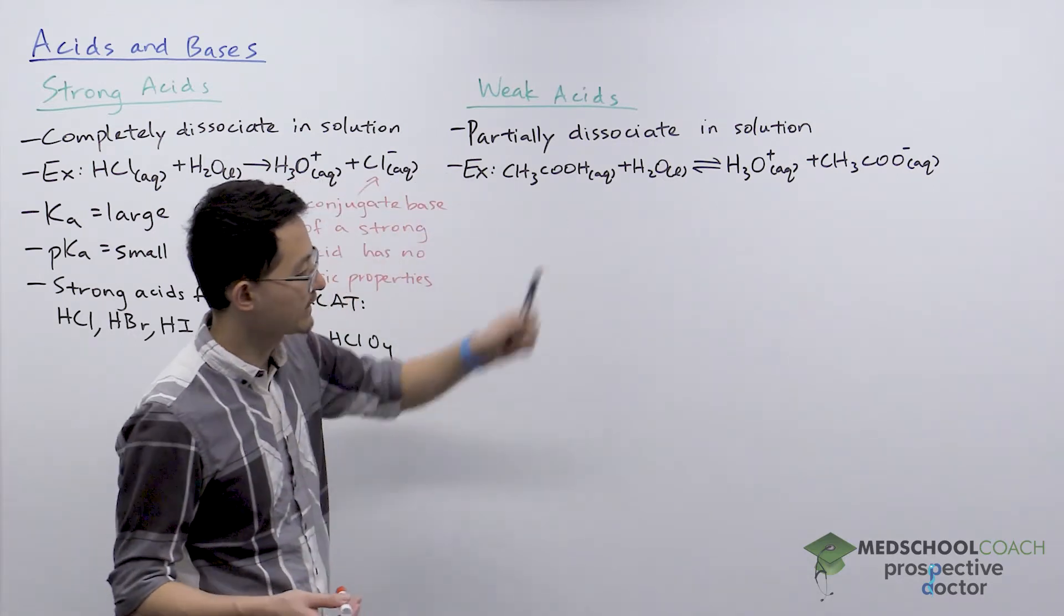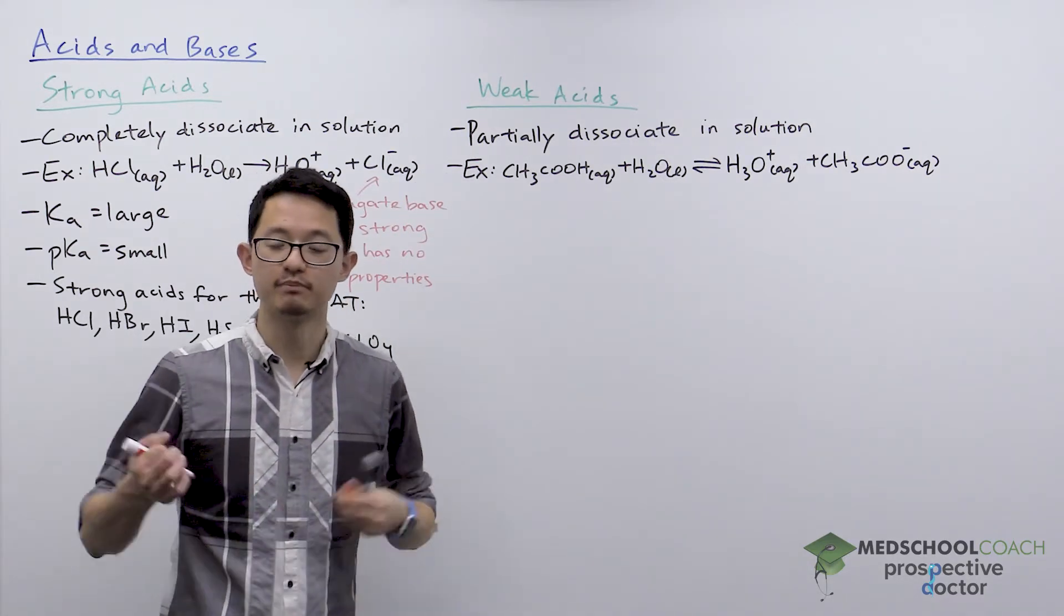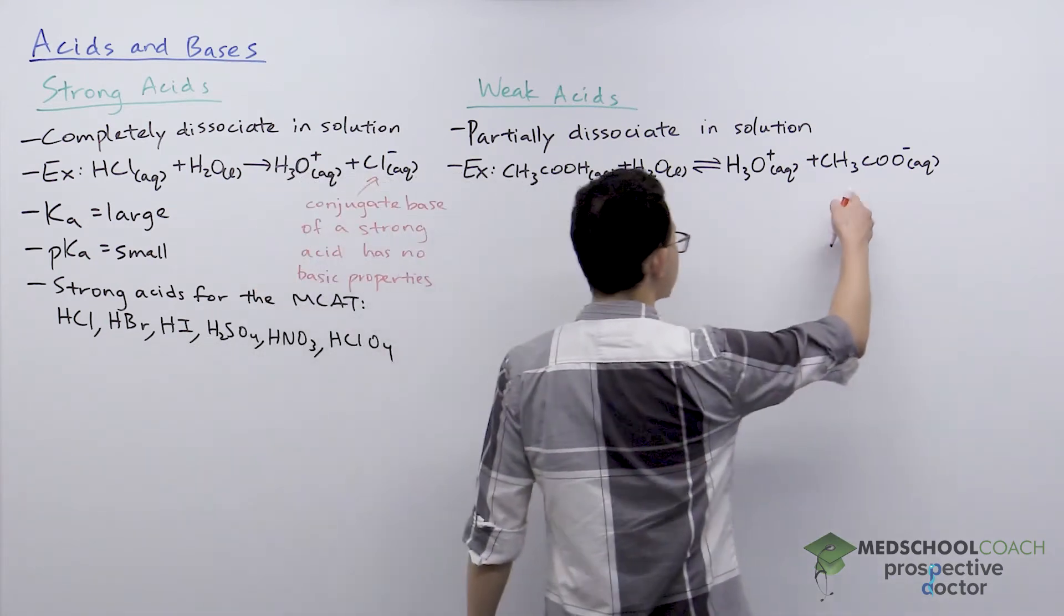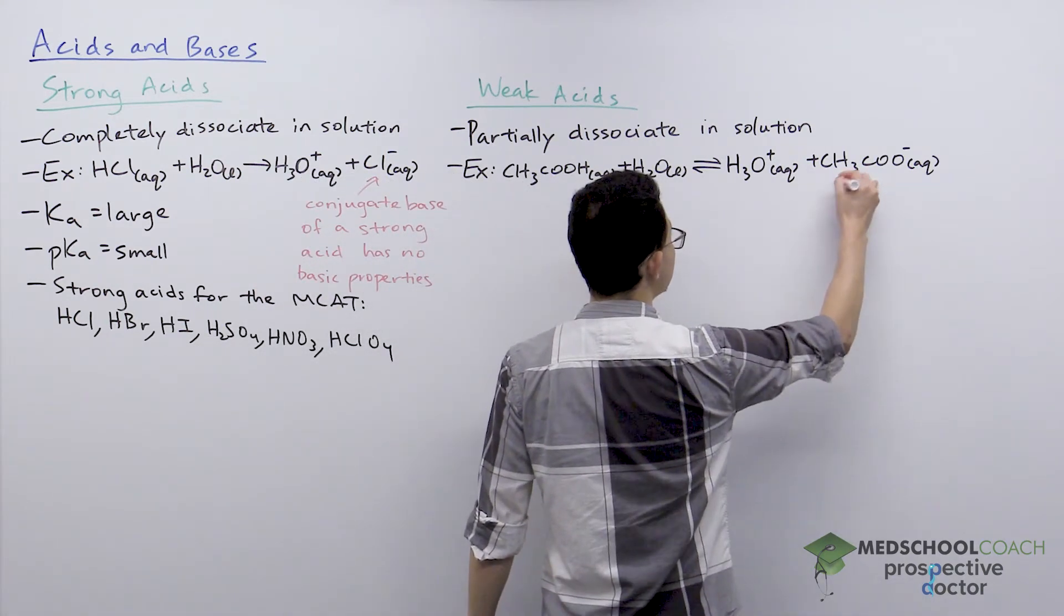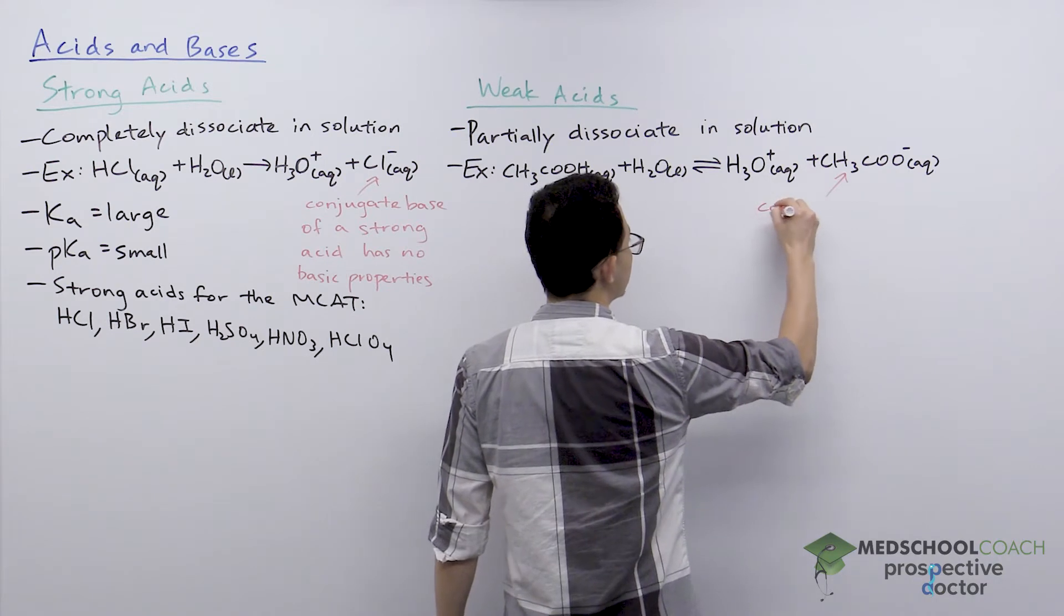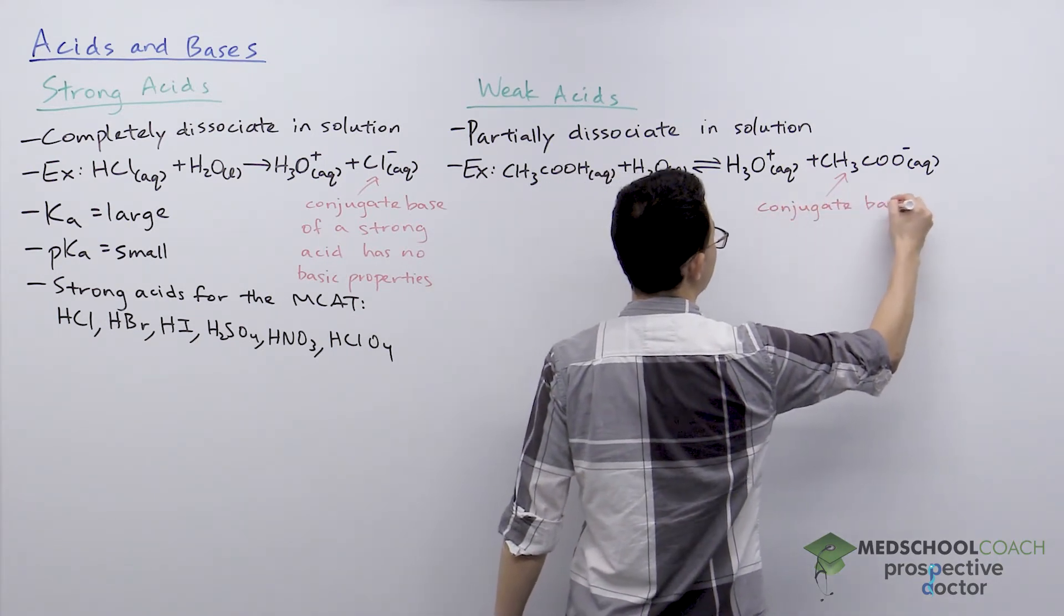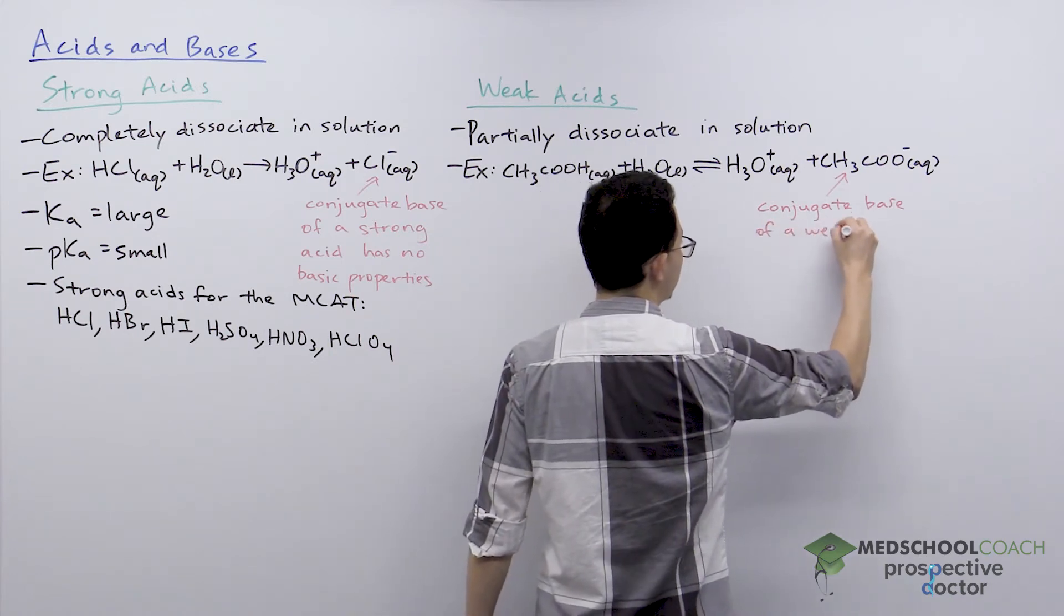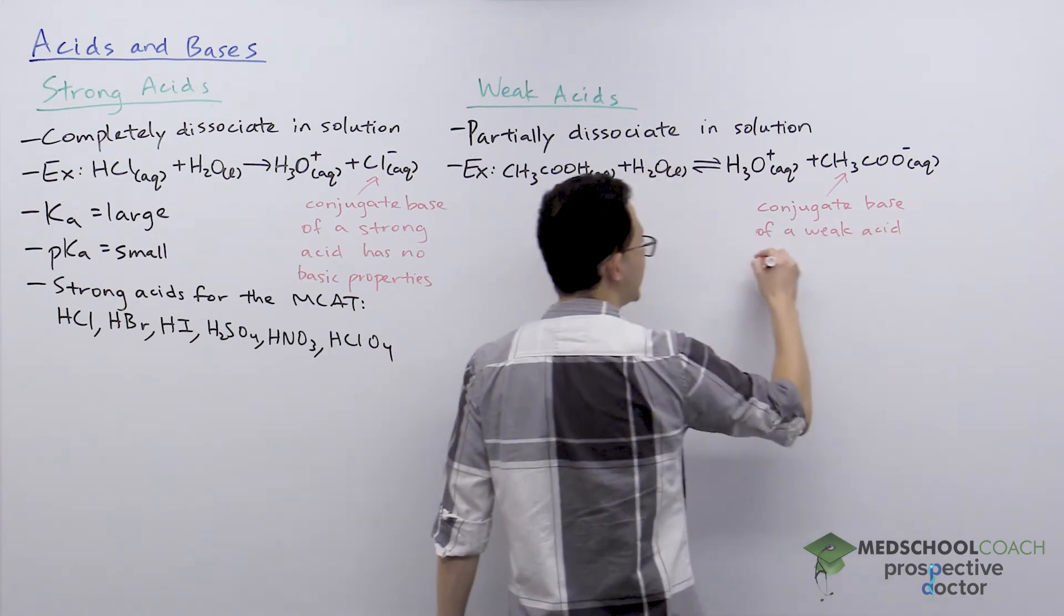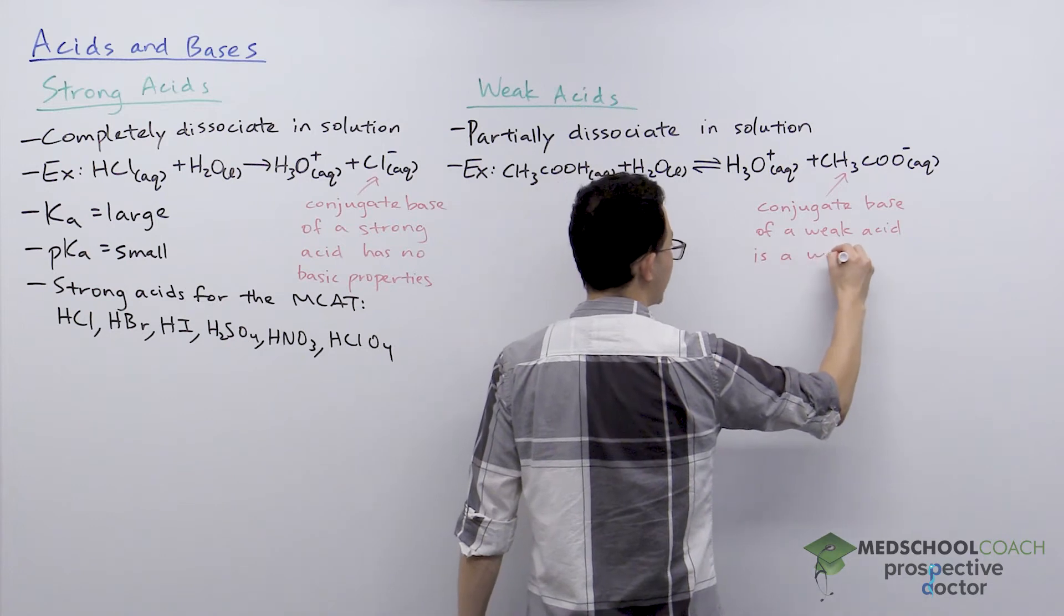So here, the fact that acetate is able to accept protons means that the acid is acting as a base. And what you need to know is that the conjugate base of a weak acid is a weak base.